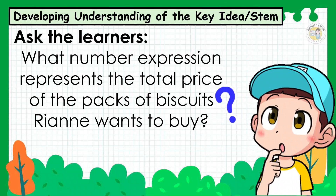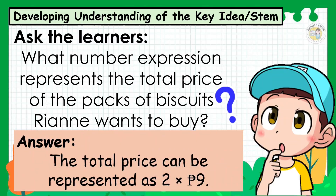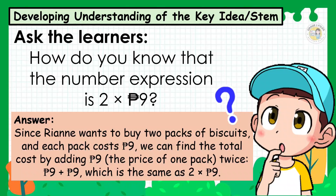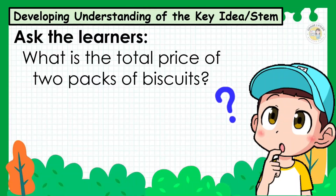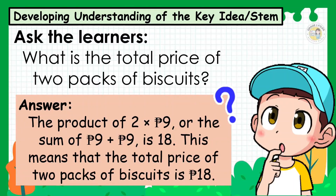What number expression represents the total price of the packs of biscuits Rian wants to buy? The total price can be represented as 2 times 9 pesos. Since Rian wants to buy 2 packs and each pack costs 9 pesos, we can find the total cost by adding 9 pesos twice: 9 plus 9, which is the same as 2 times 9. The product of 2 times 9 pesos, or the sum of 9 plus 9, is 18.